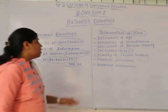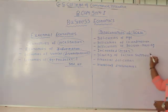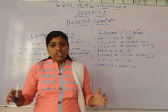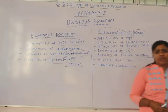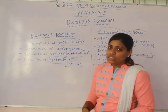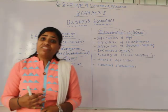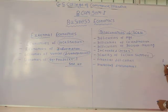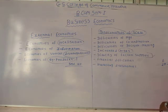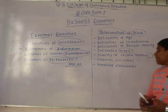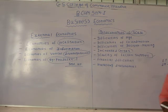The next diseconomy is scarcity of factor supplies. When the size of the industry expands and the number of firms in the industry increases, the demand for factors of production also increases — demand for raw material, labor, and other equipment all increase. If demand for all these factors is increasing while supply remains constant, the price of these factors of production will go up, due to which the cost of production of the firms under the industry will increase. So due to the scarcity of factor supplies, the cost of production increases.